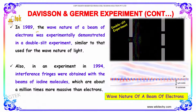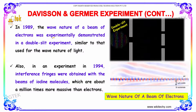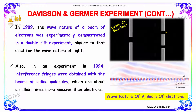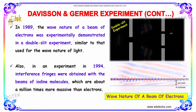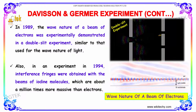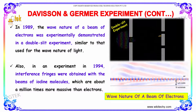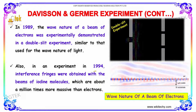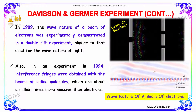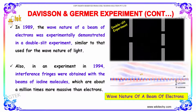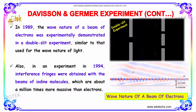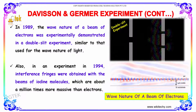In 1989, the wave nature of a beam of electrons was experimentally demonstrated with a double slit experiment, similar to the use of the wave nature of light. Also, in an experiment done in 1994, interference fringes were obtained with a beam of iodine molecules, which are about a million times more massive than electrons.